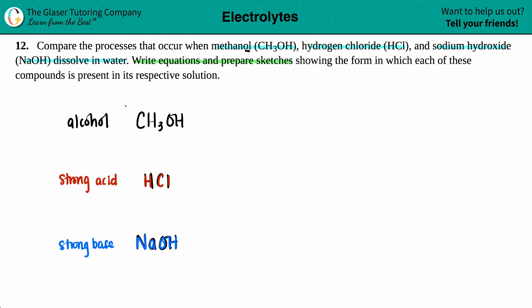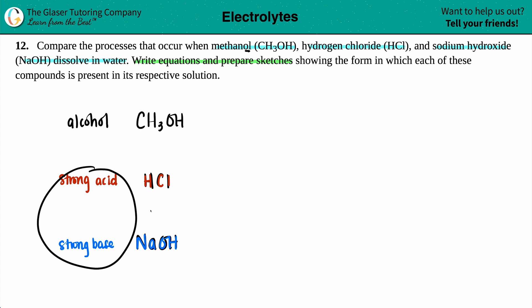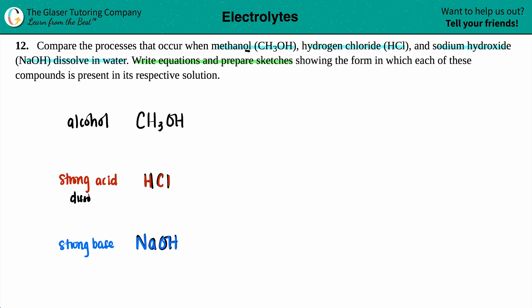Alcohols in water have an interaction, but it's not as strong as these strong acids and bases. Now, if you're a strong acid or a strong base, the reaction with water is that dissolving is going to happen. A strong acid is going to dissolve in water, and so is the strong base. This is because of the dipole-dipole interactions.